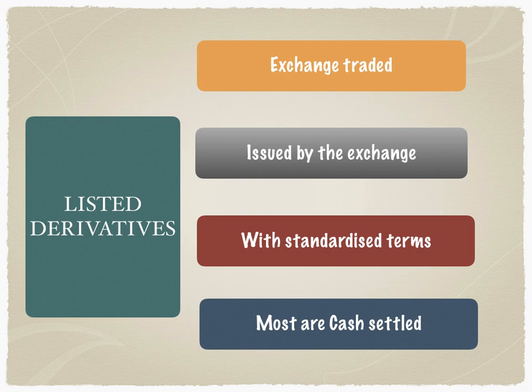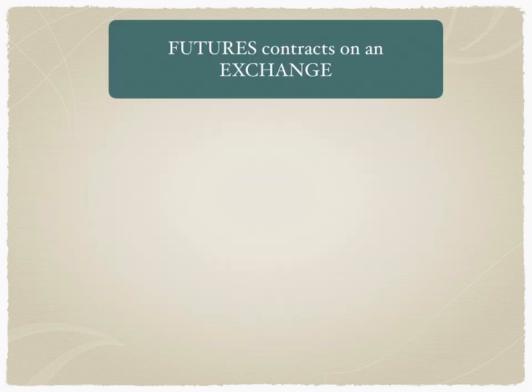Most listed derivatives are cash settled. Cash settled implies that there is no real underlying exchange of assets at the time of settlement. Instead, profits and losses are simply squared off.